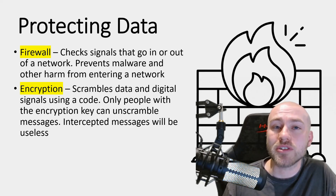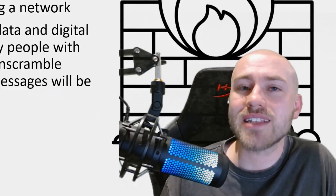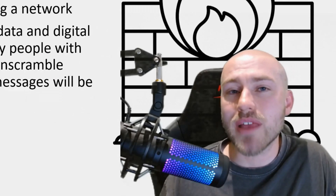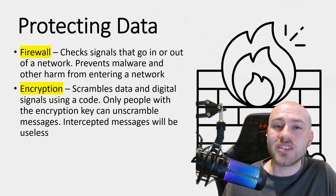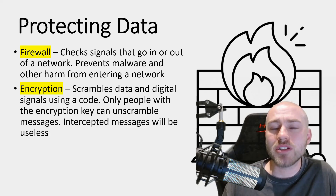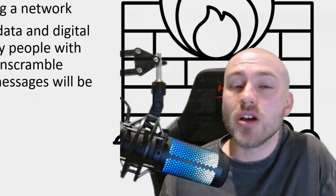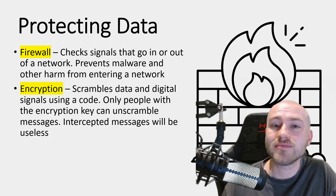Another common method is encryption. As discussed with protocols like HTTPS — where the S stands for secure — all data gets scrambled as it's sent, making it useless to anyone who intercepts it. Only people with an encryption key can read the information. Apps like WhatsApp use end-to-end encryption: messages appear as plain text to you, get encrypted when sent, and are decrypted only when received by the intended recipient.